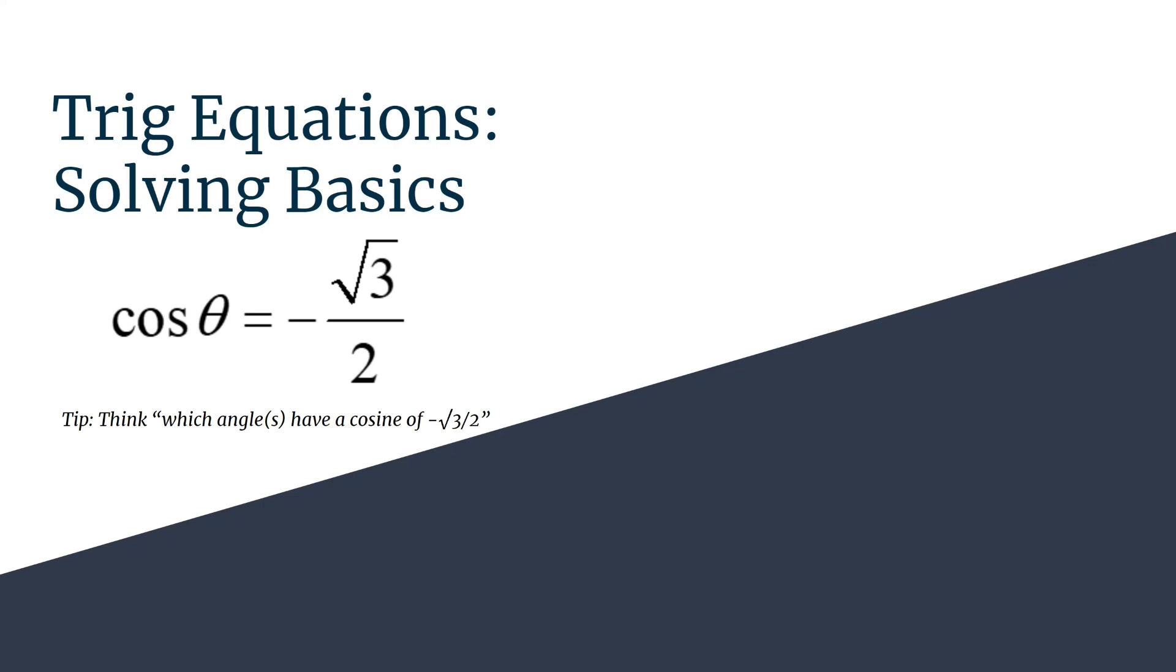As we look at this, something to keep in mind is that this process is going to be very similar to what we use when we find exact values. We're just going to be working in the other direction. So a good tip is to think which angle or angles have a cosine of negative square root 3 over 2. That's really all this equation is asking us.